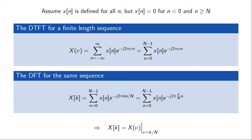For finite length sequences there is a direct relation between the DTFT and the DFT. If x(n) is zero for negative n and for n greater than or equal to capital N, meaning it is non-zero for only N values, then the DTFT's infinite sum reduces to a finite sum. Comparing this to the DFT definition, the only difference is the appearance of ν in one and k/N in the other. This implies that the k-th DFT coefficient equals the DTFT evaluated at frequency k/N.